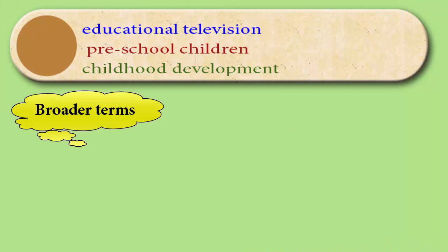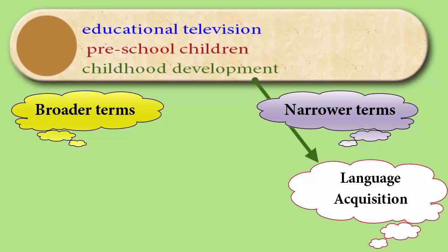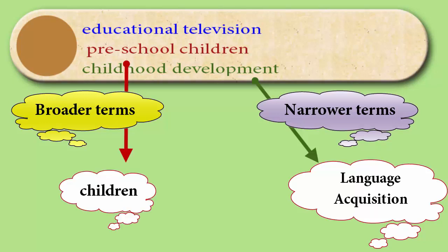Additionally, I'll want to have broader and narrower terms for some parts of my topic at the ready. For instance, 'development' is pretty general — I might decide to focus on 'language acquisition' and choose that term to narrow down my search. Or I might decide that 'preschool children' is too narrow, and open it up to the more general term 'children.'